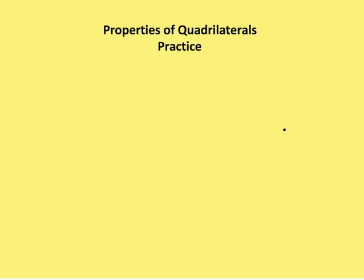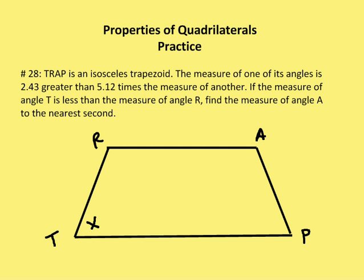First problem we have in our textbook number 28. I know that TRAP is an isosceles trapezoid. The measure of one of its angles is 2.43 greater than 5.12 times the measure of another angle. The measure of angle T is less than the measure of angle R, and find the measure of angle A to the nearest second.